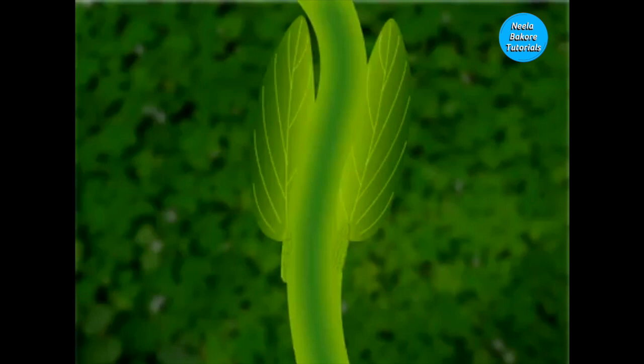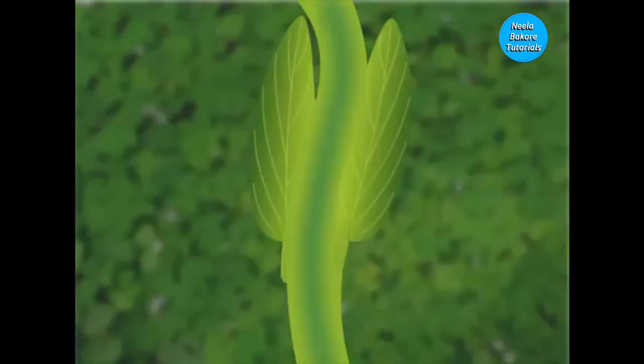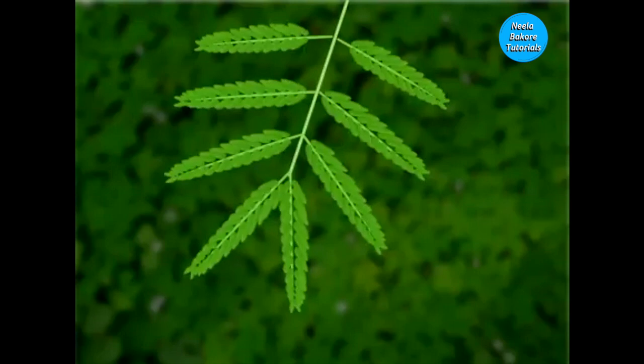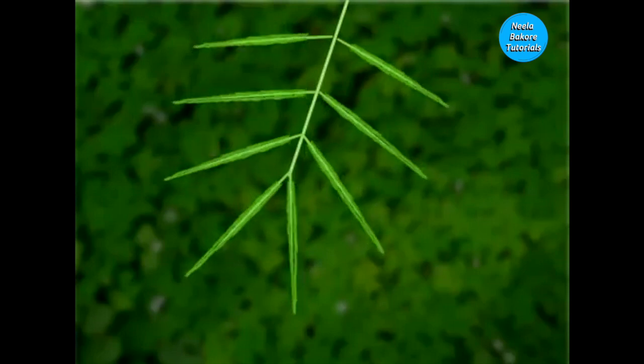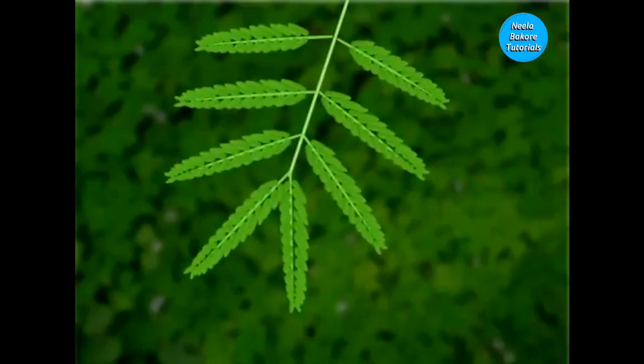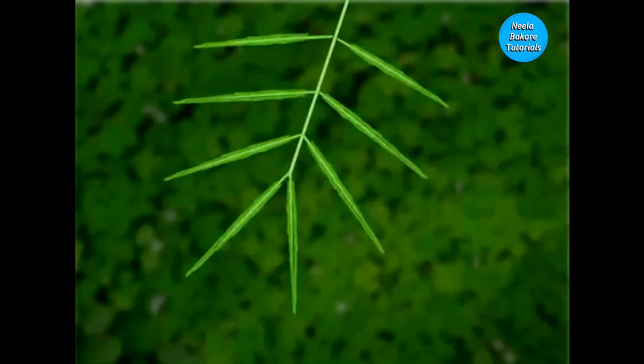This movement is known as thigmonasty. After a few minutes, the cells of the pulvinus undergo endosmosis and become turgid, which causes the opening of the leaves.